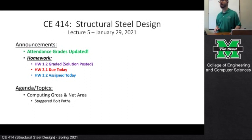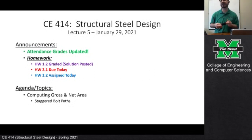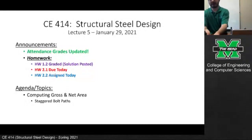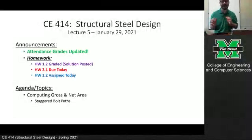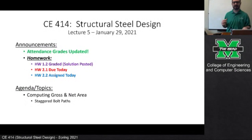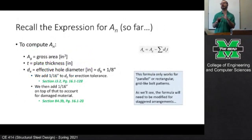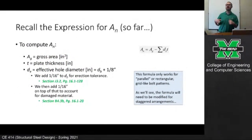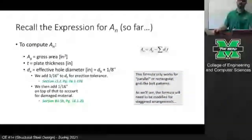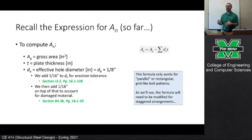Let's talk about what we need to cover today, which is basically taking our concept of net area and expanding on it a bit. What we did last time was we assessed gross and net area for paths that were what I call parallel — or grid-like patterns. We had developed a rough conceptual formula for the net area: the net area equals the gross area minus the area lost due to the presence of bolt holes.